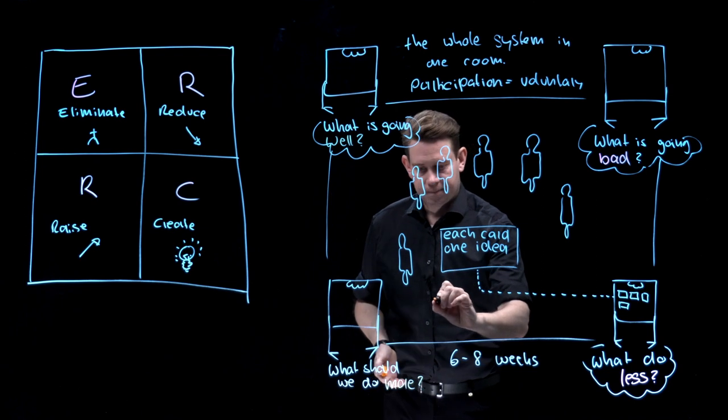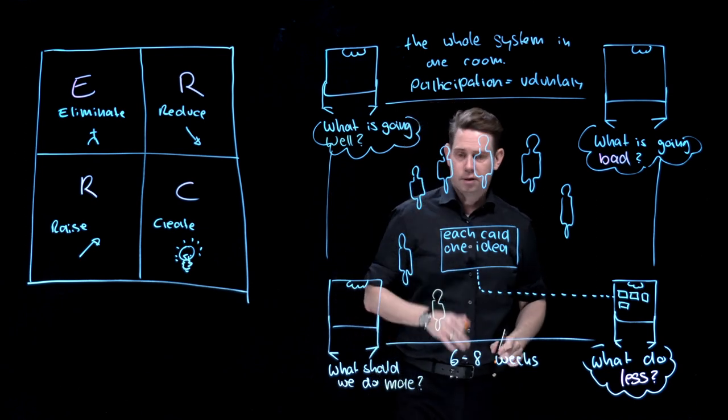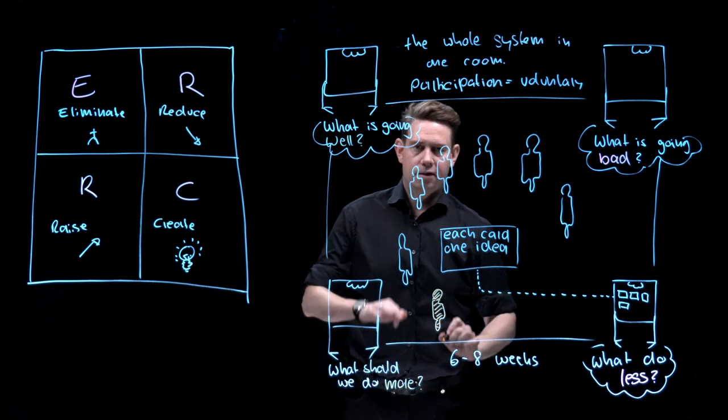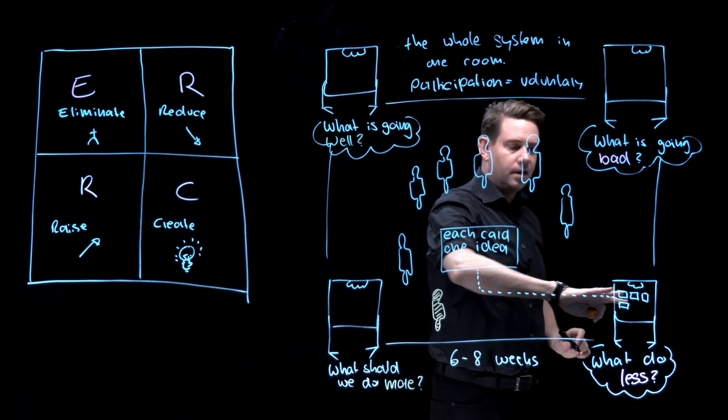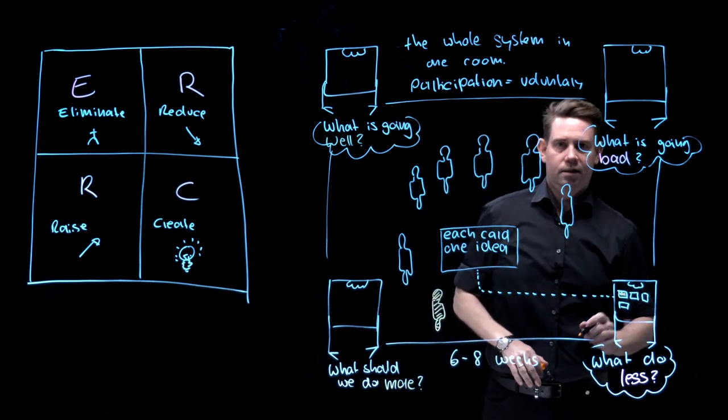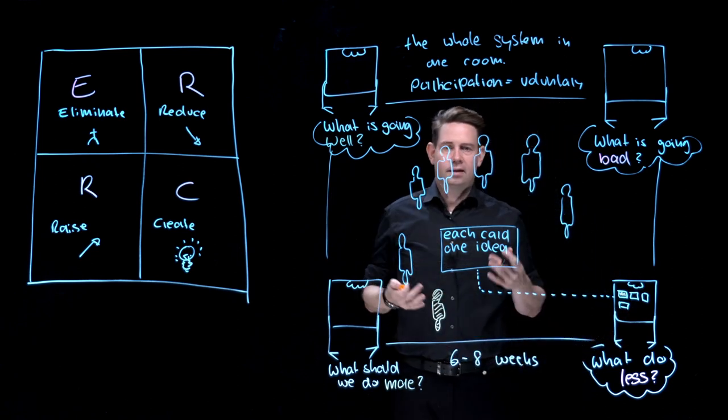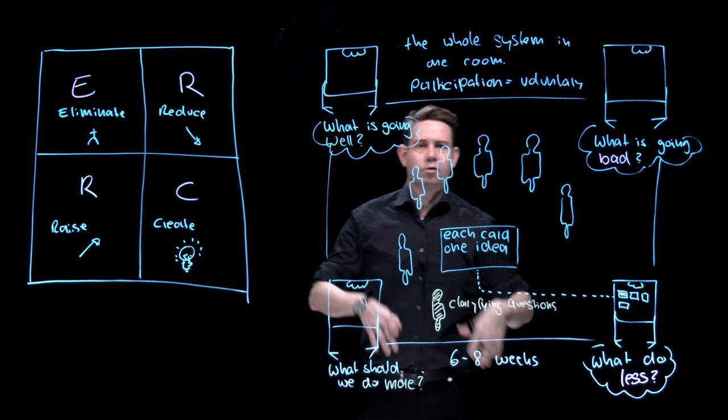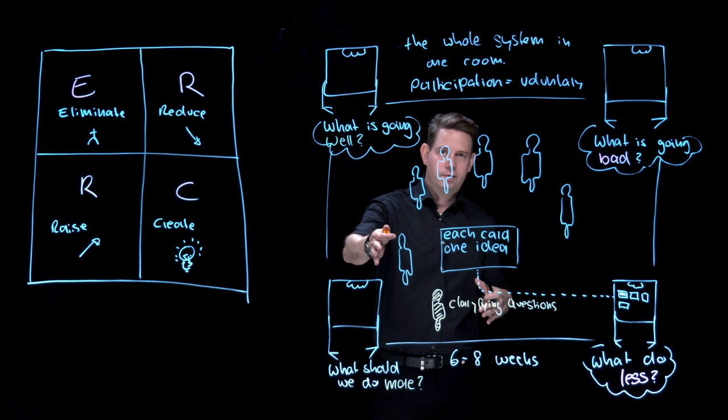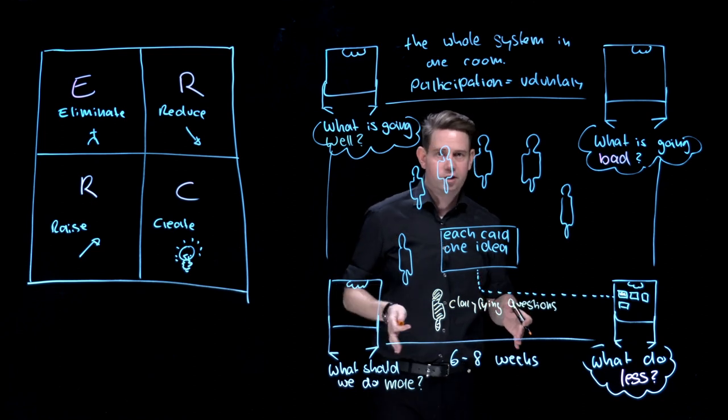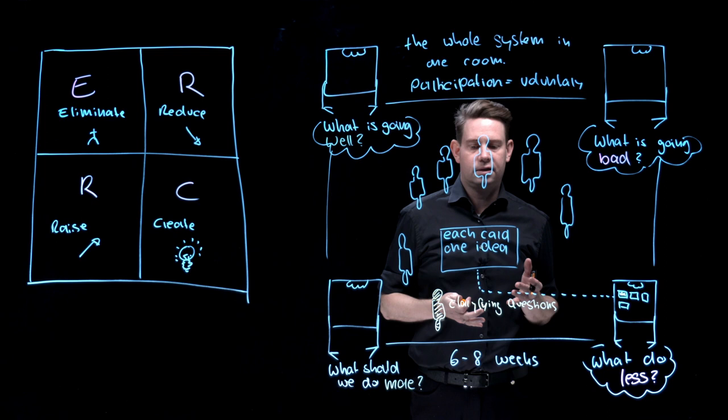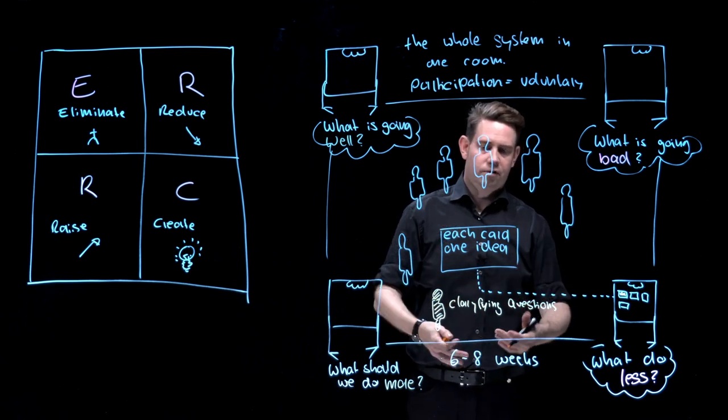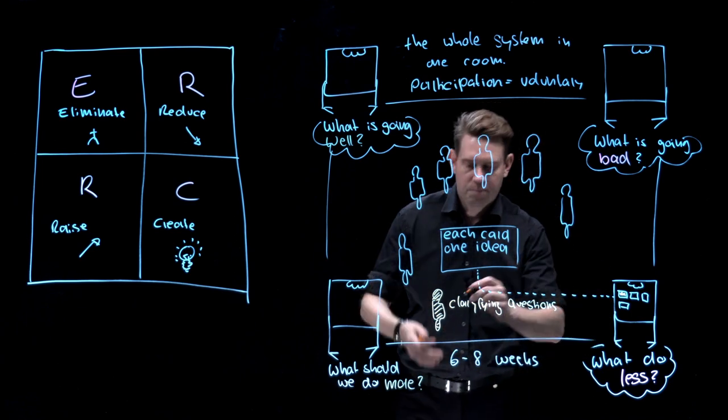After this is being done, we need one facilitator. Actually, we need two, but one person who is facilitating the process by going to each and every board and reading each and every card and asking clarifying questions. Don't justify yourself if people complain about something. And usually people will complain, especially if this is the first sounding board you are conducting. People will complain. Don't justify yourself. Don't justify the organization. Just ask clarifying questions and prepare feedback.